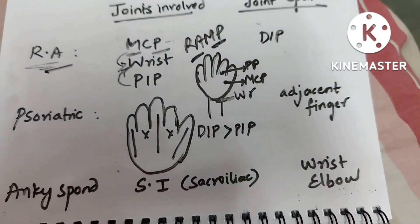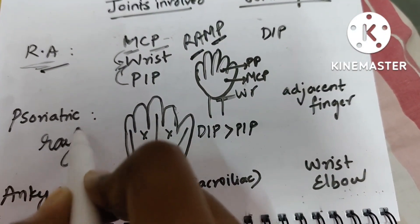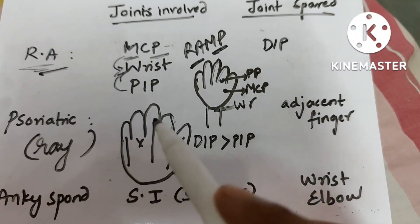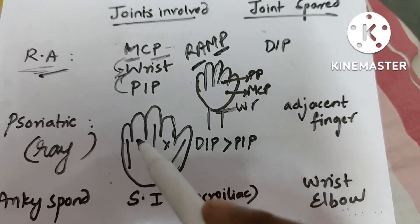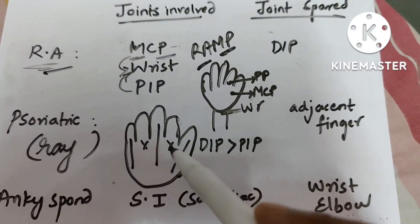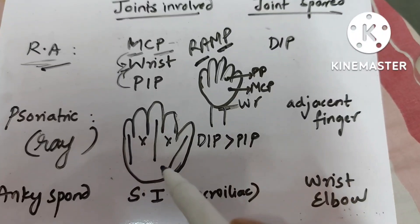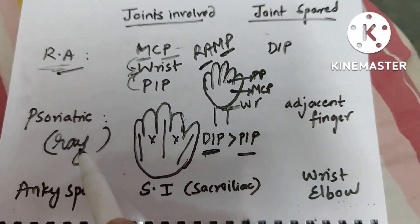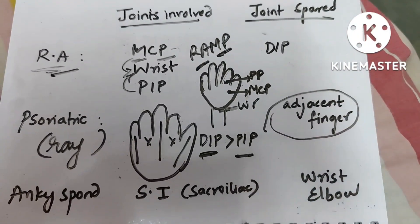Psoriatic arthritis has ray distribution, meaning if one finger is involved the adjacent finger is not involved. In psoriatic arthritis, DIP involvement is greater than PIP, and the adjacent finger joints are spared.